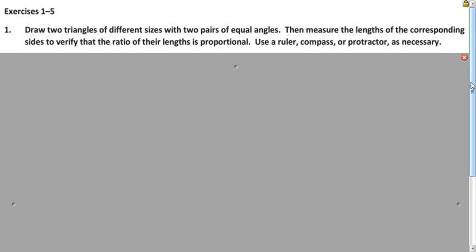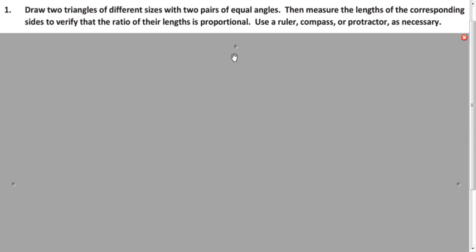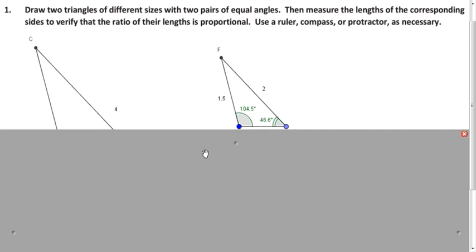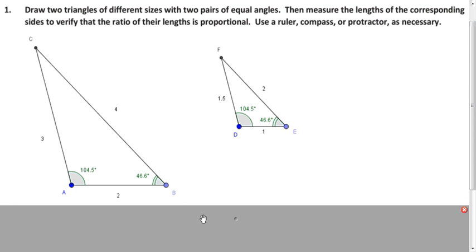Then we're going to check all the side lengths and see what's special. So here are my two triangles. It turns out that all the side lengths in DEF are half of the corresponding side lengths in triangle ABC.